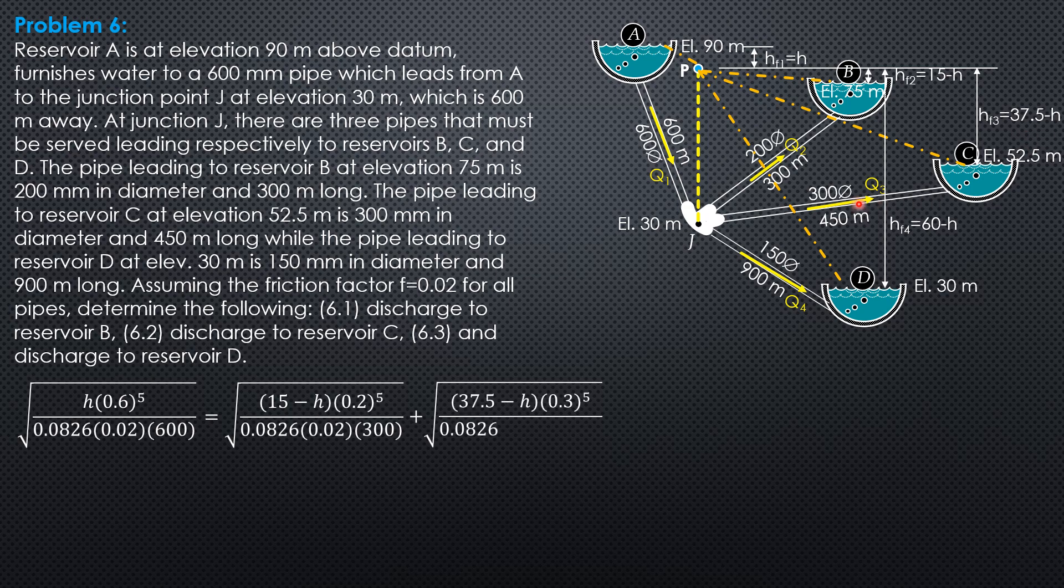Q3 is square root of 37.5 minus H times 0.3 to the fifth over 0.0826 times 0.02 times 450. And lastly, Q4 plus square root of 60 minus H times 0.15 to the fifth over 0.0826 times 0.02 times 900.